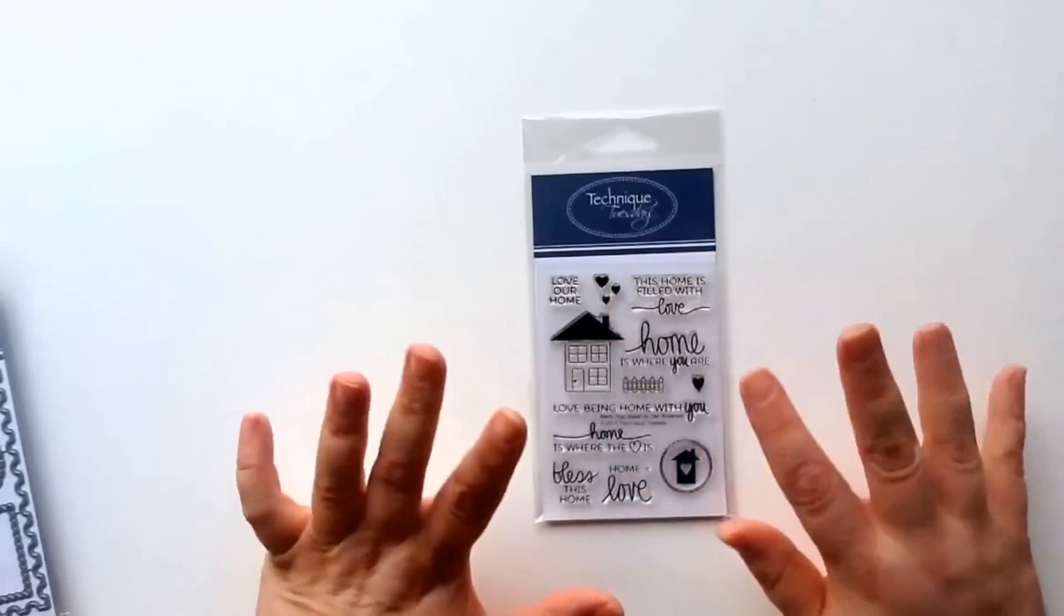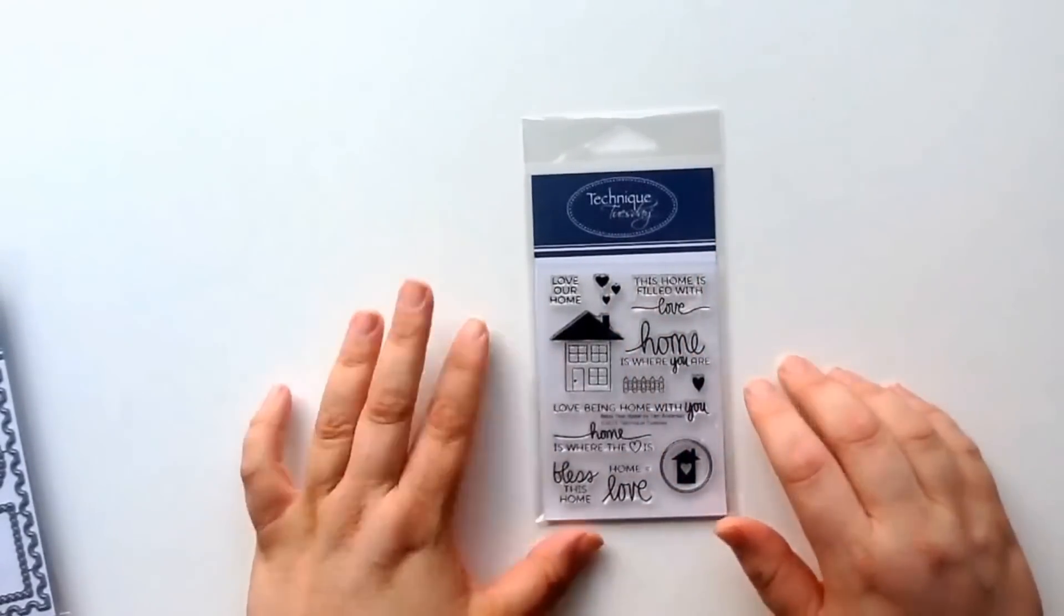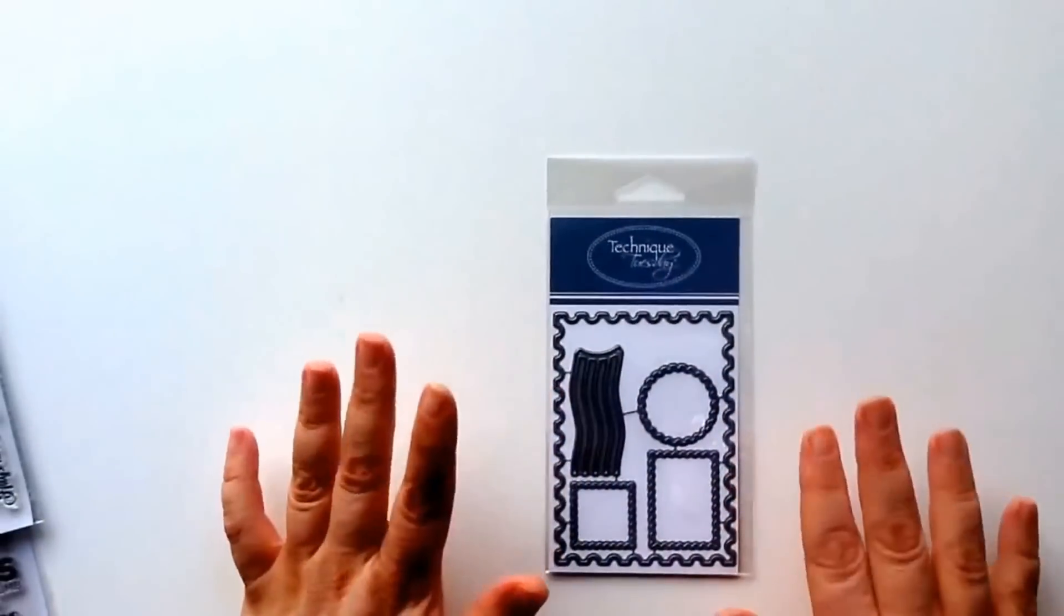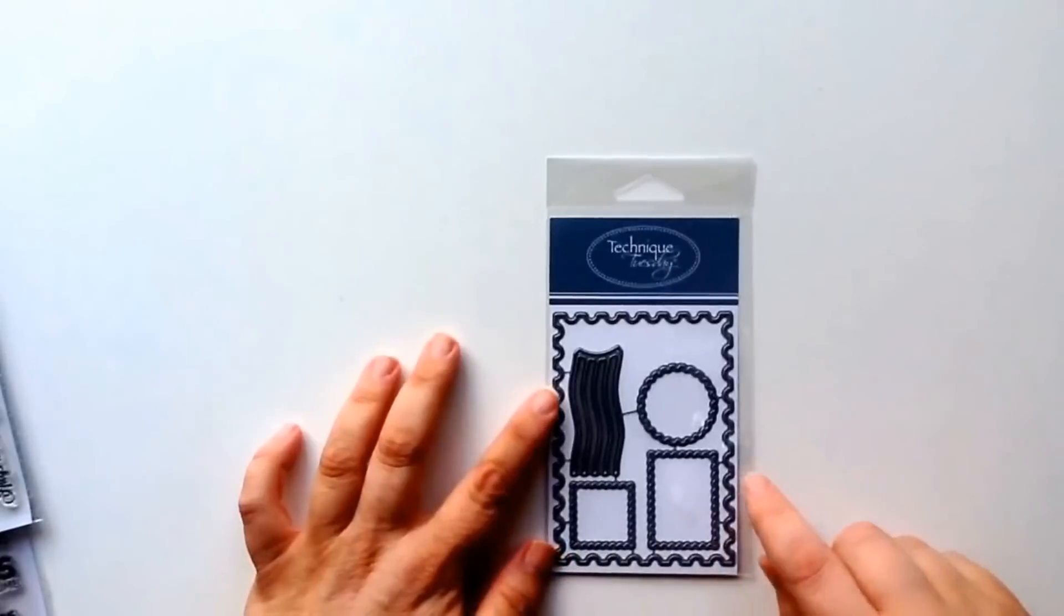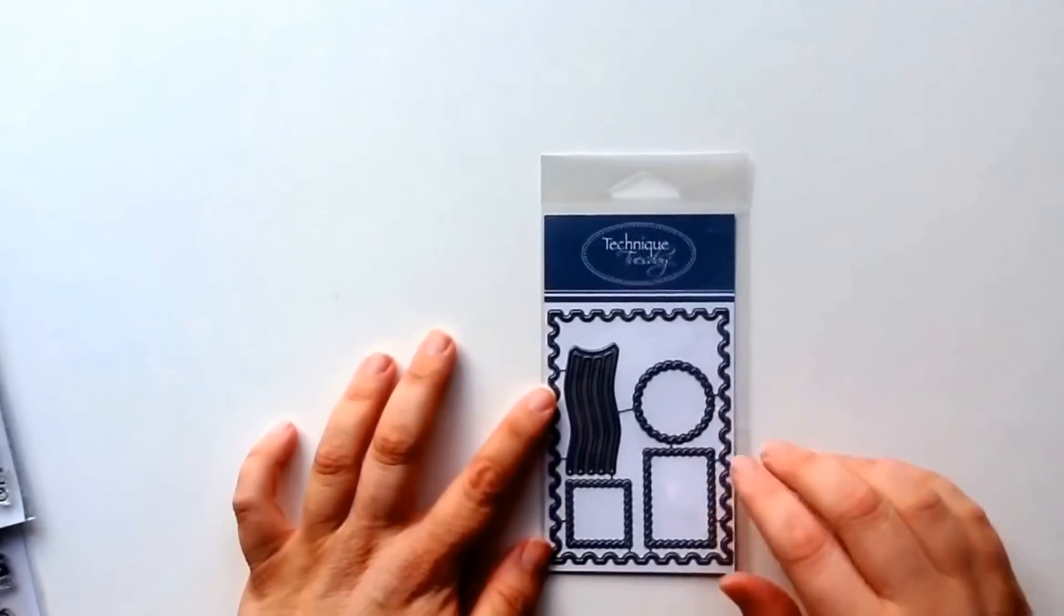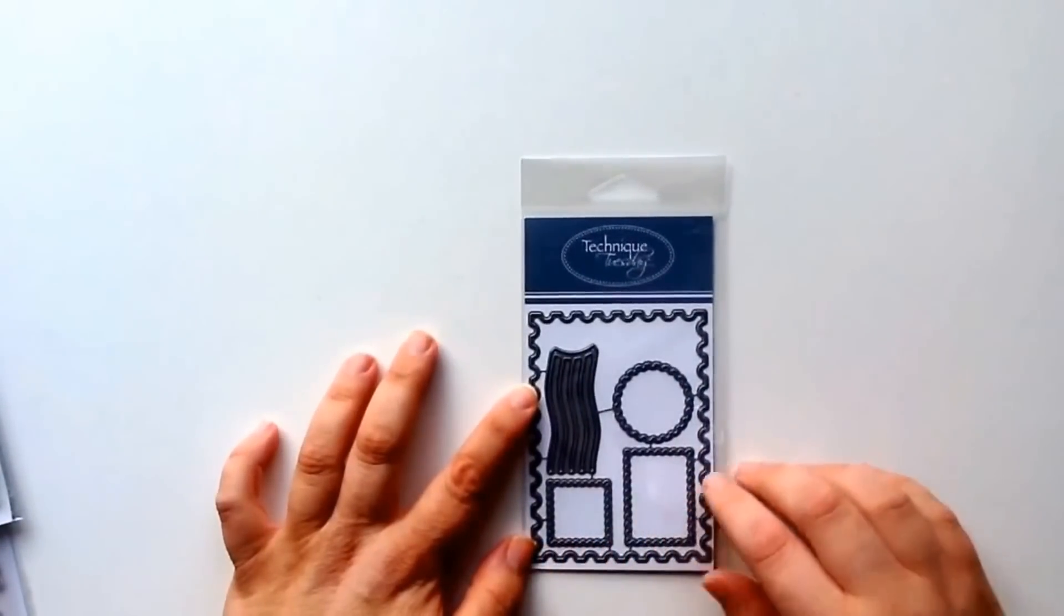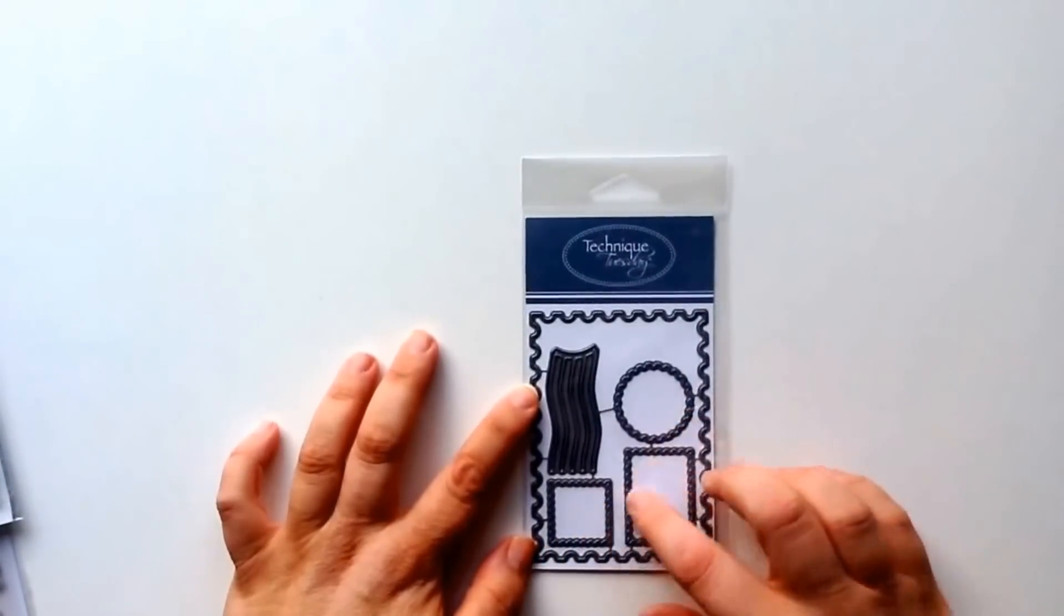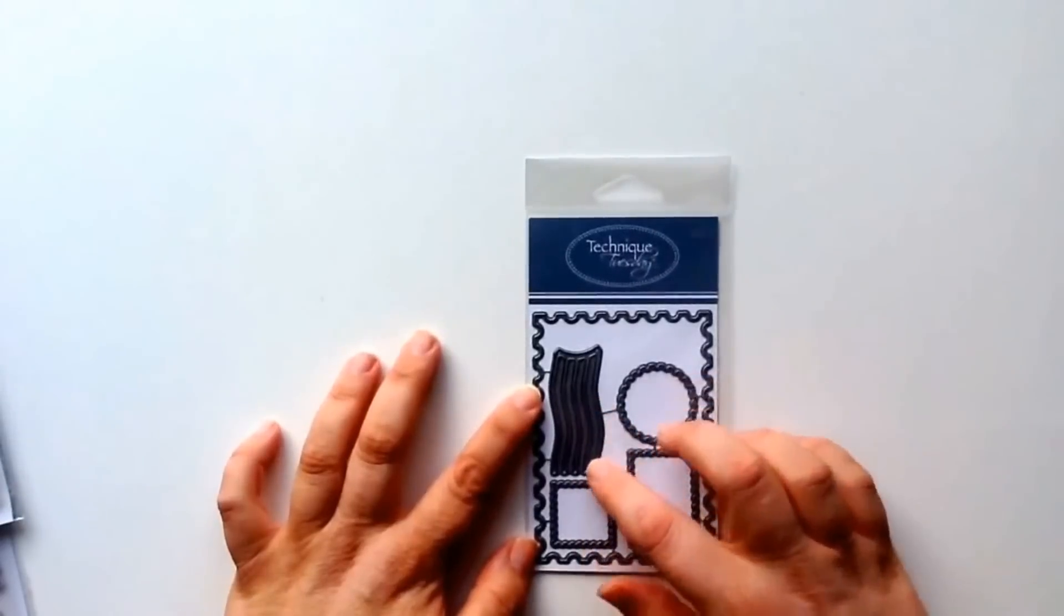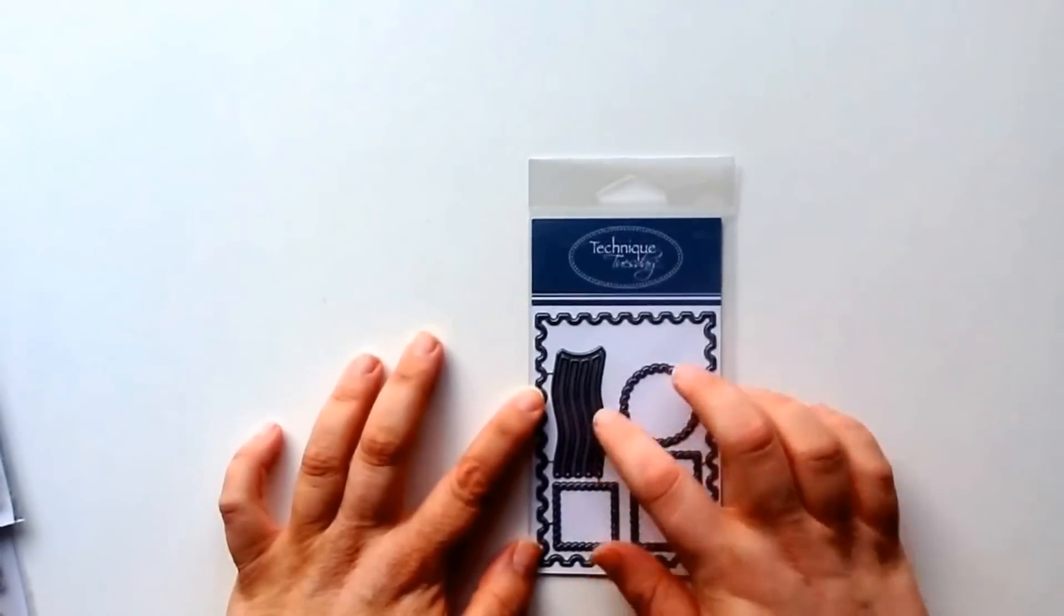Another new product this month is the new postage card die. Now this die consists of five dies: a large postage die as well as three ones that look like stamps and then this one that looks like a little postage cancellation mark.